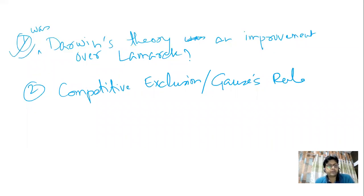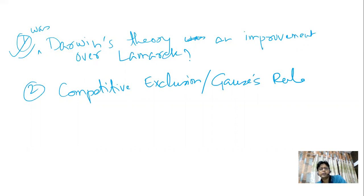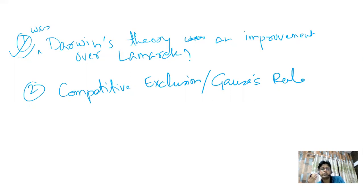Starting with why this question - I did not directly say 'what is Darwin's theory' or 'critically analyze Lamarck's theory.' Those questions have been there in past years. But the last couple of years, that pattern has changed a lot. In the new way of asking questions, UPSC is trying to complicate things by asking you to compare things. If you can give a good answer for a comparison, your concepts are really clear.